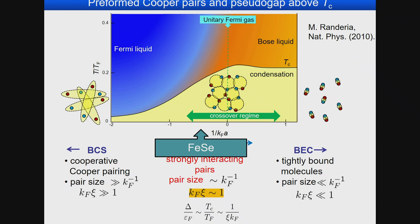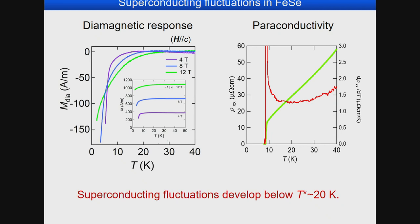An important feature of this phase diagram is that there is another temperature scale beyond T_C: the pairing temperature. There is an extended temperature regime between the pairing temperature and T_C where you have so-called preformed Cooper pairs, or a pseudo-gap. We want to look at the superconducting fluctuations in this system. We have evidence for very large superconducting fluctuations — for example, the diamagnetic response shows a temperature-dependent magnetization that starts from fairly high temperatures above T_C (~9 K).